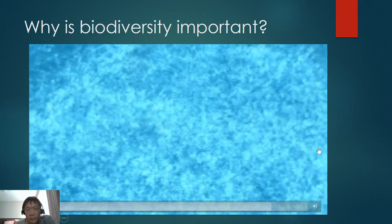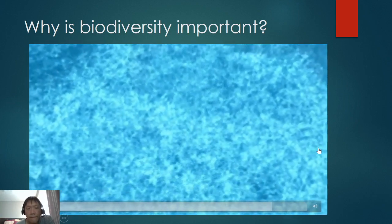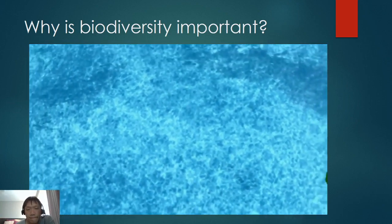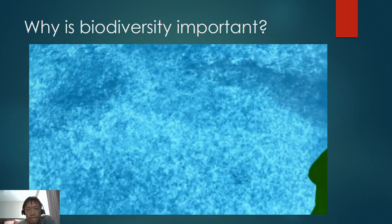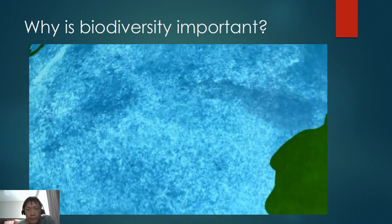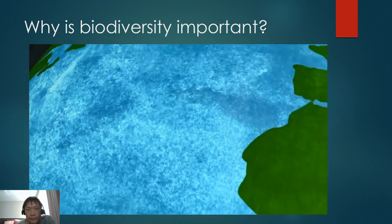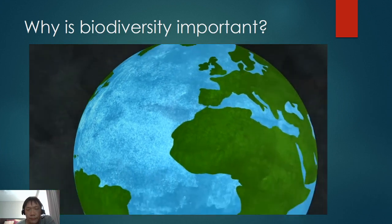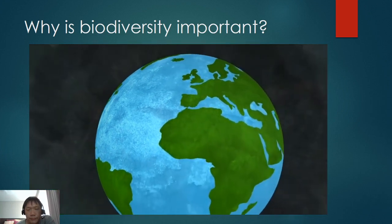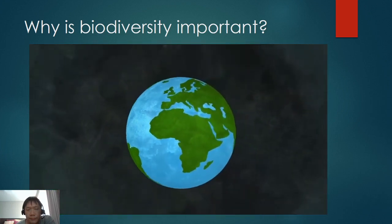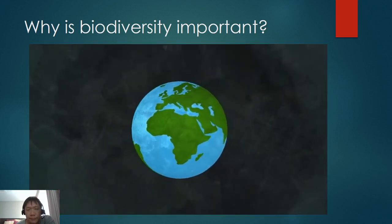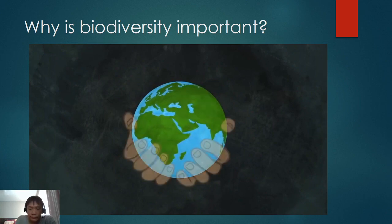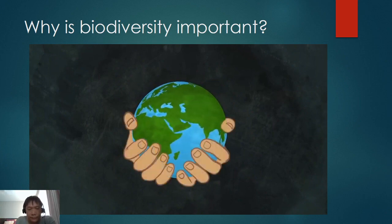We humans are woven into this biodiversity too. When just a few strands are lost, our own well-being is threatened. Cut too many links, and we risk unraveling it all. What the future brings is unpredictable, but biodiversity can give us an insurance policy — Earth's own safety net — to safeguard our survival.